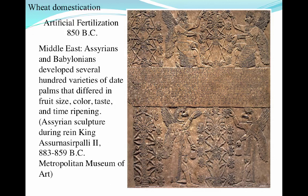Another area that has really lent itself to rapid genetic progress is the use of artificial fertilization. The Babylonians and Assyrians actually developed several hundred varieties of date palms that differed in fruit size, color, taste, and time to ripen. That technology was used very early on — around 850 BC.